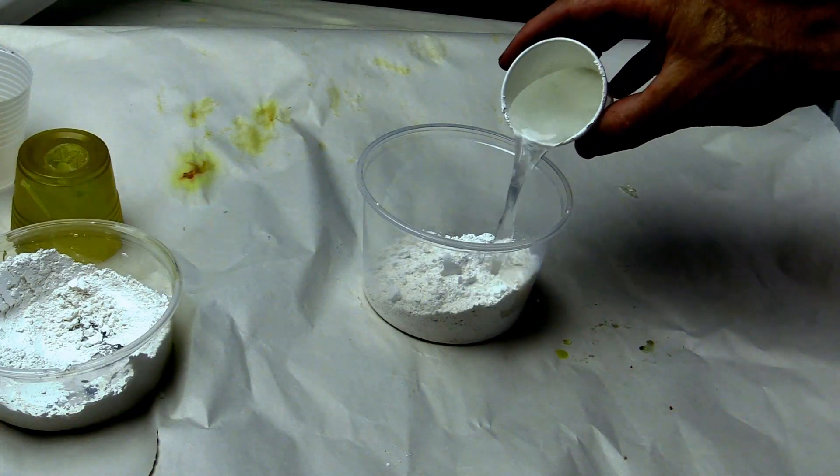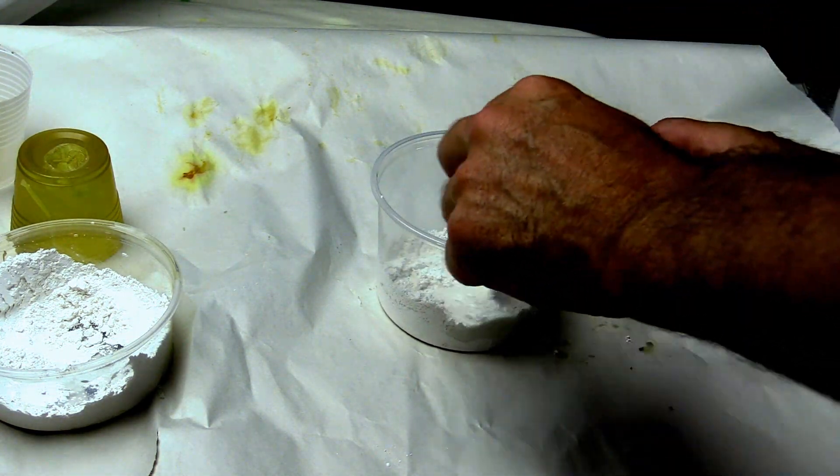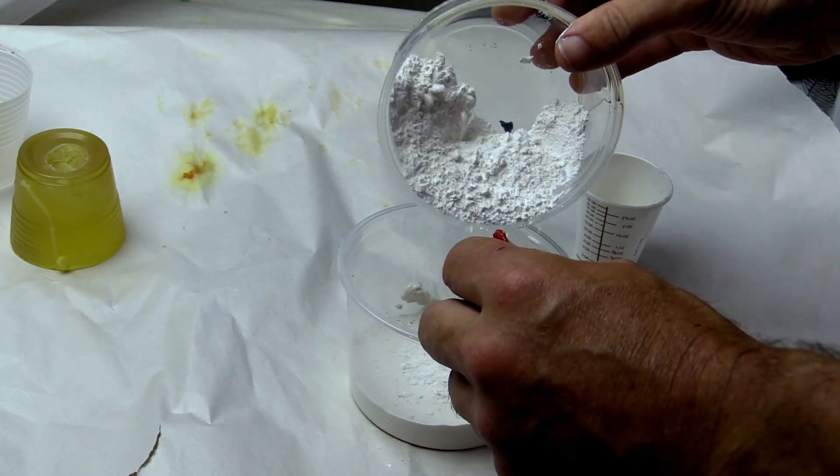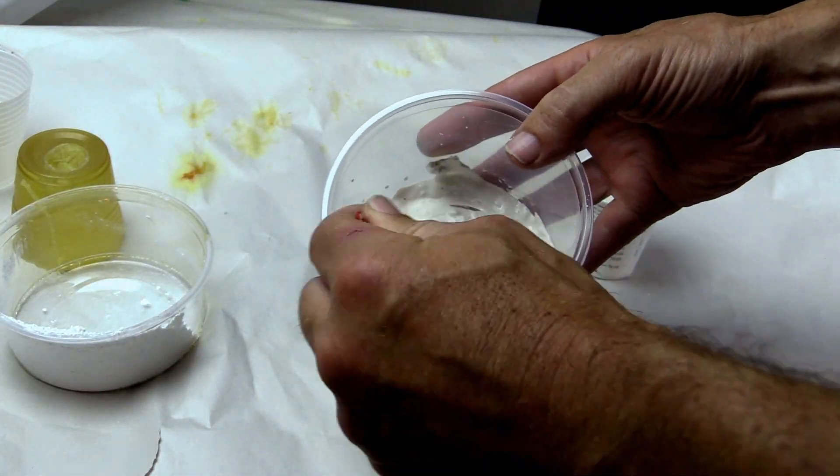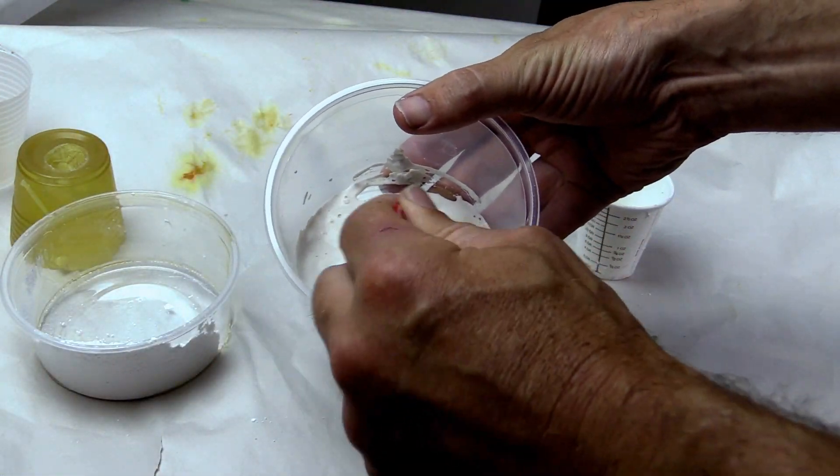Now we make the disposable ComposiMold plaster mold using the wax. Mix the ComposiMold plaster with the water at about 2.5 parts by weight or volume plaster to one part water. I typically just eyeball it and make it as thick as possible while still being pourable.